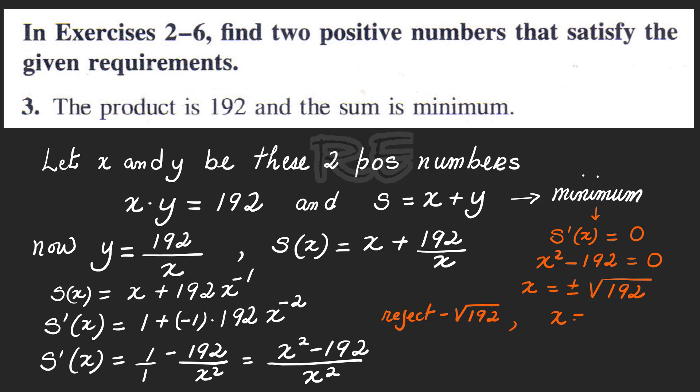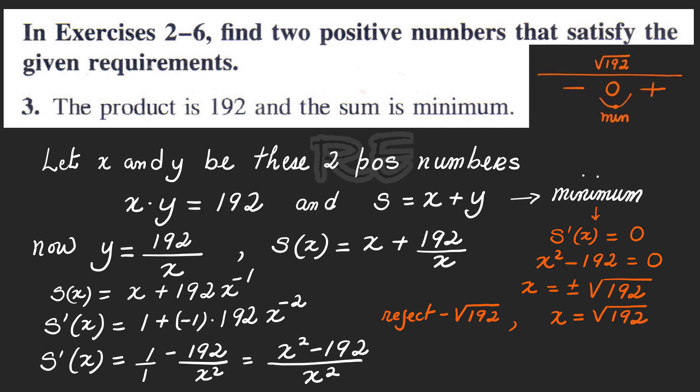We reject negative square root of 192. We are looking for two positive numbers. And we keep x equal to square root of 192, which is a minimum because the derivative at square root of 192 is zero and decreases before and increases after.